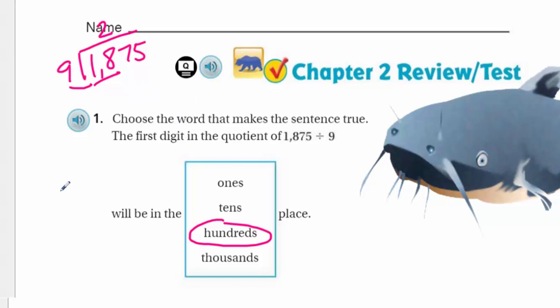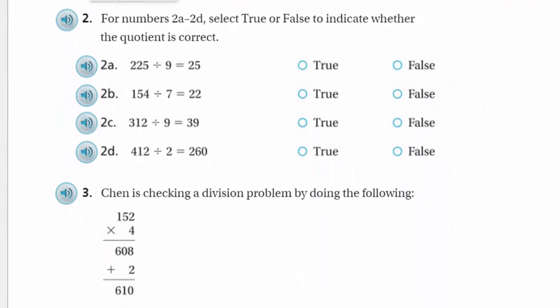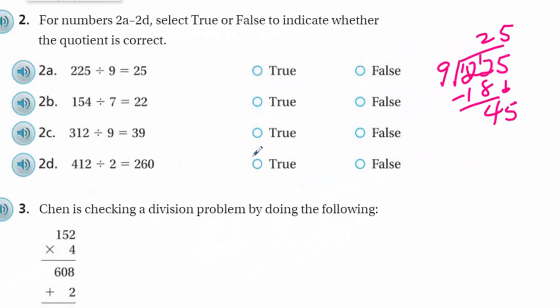I think what they really want us to do on these problems is when we do our long division. So 1,875, I'm going to go ahead and divide that by my 9. We're trying to find out how many groups we're going to put 9 in each group. We have 18 hundreds, we can do that two times. So the first digit in the quotient up here on the top is going to be in the hundreds place. So here we would circle the hundreds. Does that make sense?